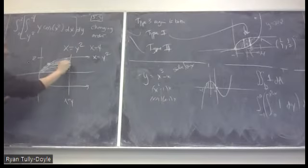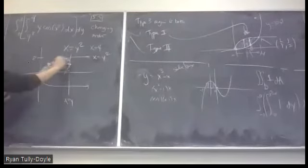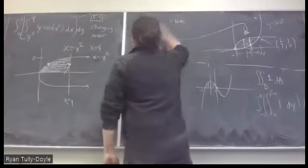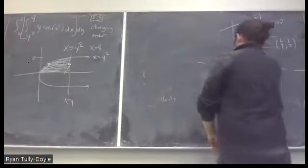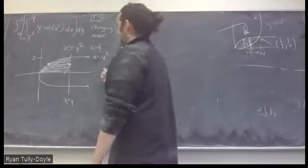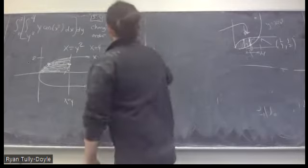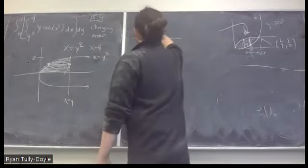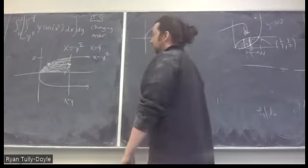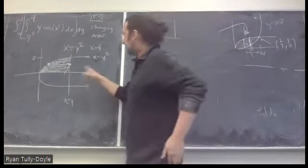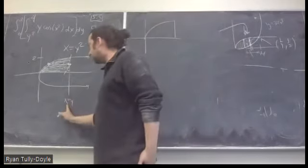We're integrating from the parabola to the line x = 4, doing slices that start at y = 0 and end at y = 2. Now let's switch the order of integration. To invert x = y², I write y = √x. There's no flipping here — I'm changing from a right-function and left-function perspective to a top-function and bottom-function perspective.